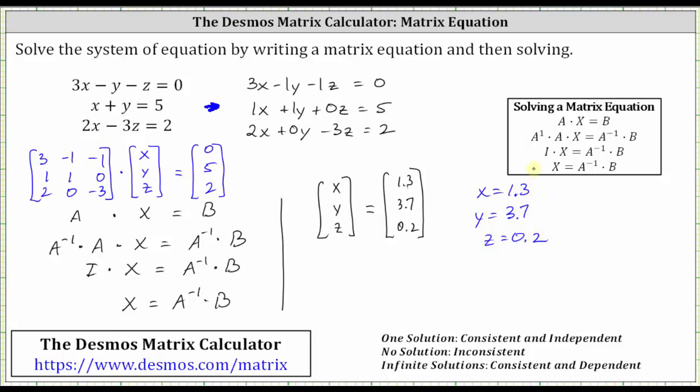The solution is often expressed as an ordered triple, which should be in parentheses, 1.3 comma 3.7 comma 0.2.